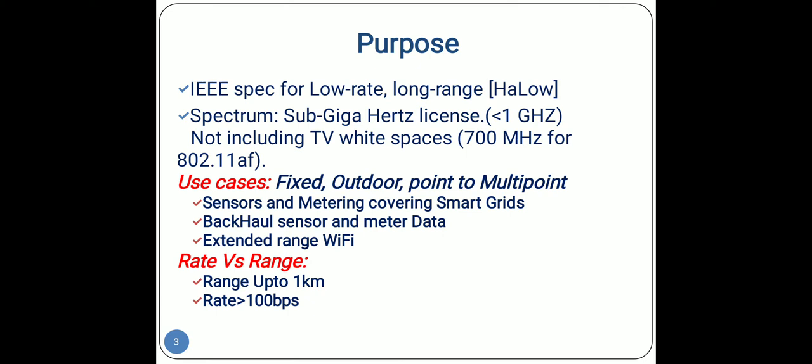It is pronounced as HaLow. It uses 900 MHz license-exempt bands to provide extended range Wi-Fi networks compared to conventional Wi-Fi networks operating in 2.4 GHz and 5 GHz ISM bands. It also benefits from lower energy consumption, allowing the creation of large groups of stations or sensors that cooperate to share signals, supporting the concept of Internet of Things.